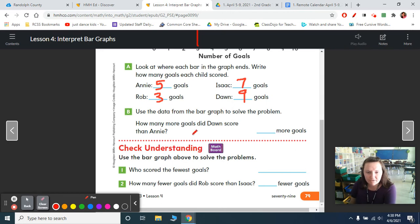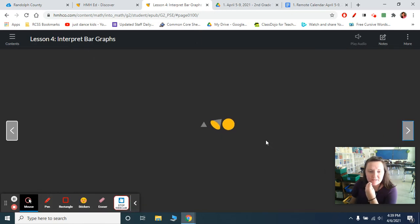It says use the data from the bar graph to solve the problem. So how many more goals did Dawn score than Annie? Dawn has nine minus Annie, which is five. That's four. All right, who scored the fewest goals? So who did the worst job? Looks like it was Rob. So we're going to write R-O-B. At least his name is short. And then how many fewer goals did Rob score than Isaac? So Isaac had seven minus three, which is four. All right, so go ahead and fill in all your information. I'm going to clear the screen and move on to the next page, which is the On Your Own page.